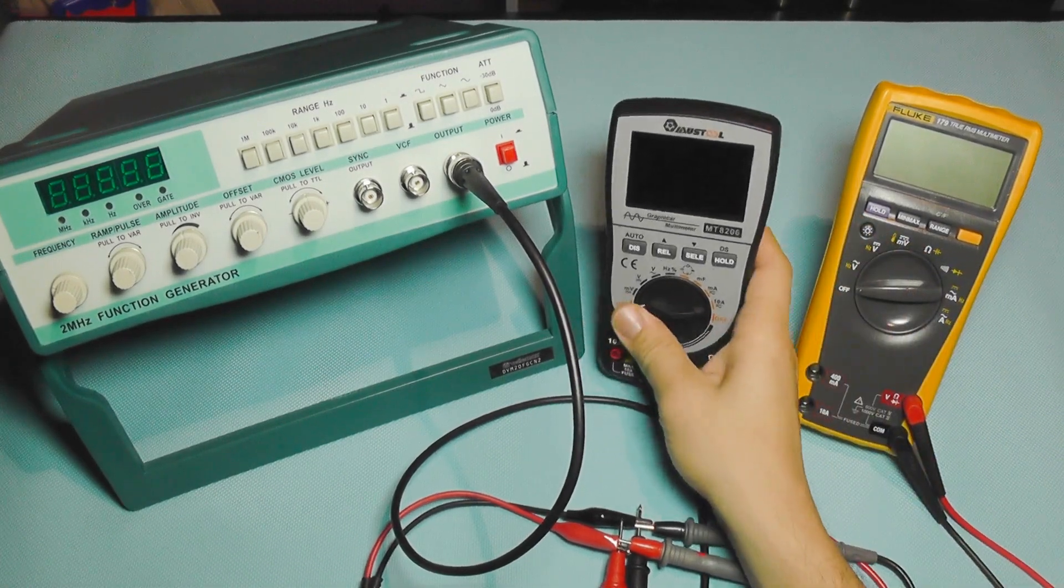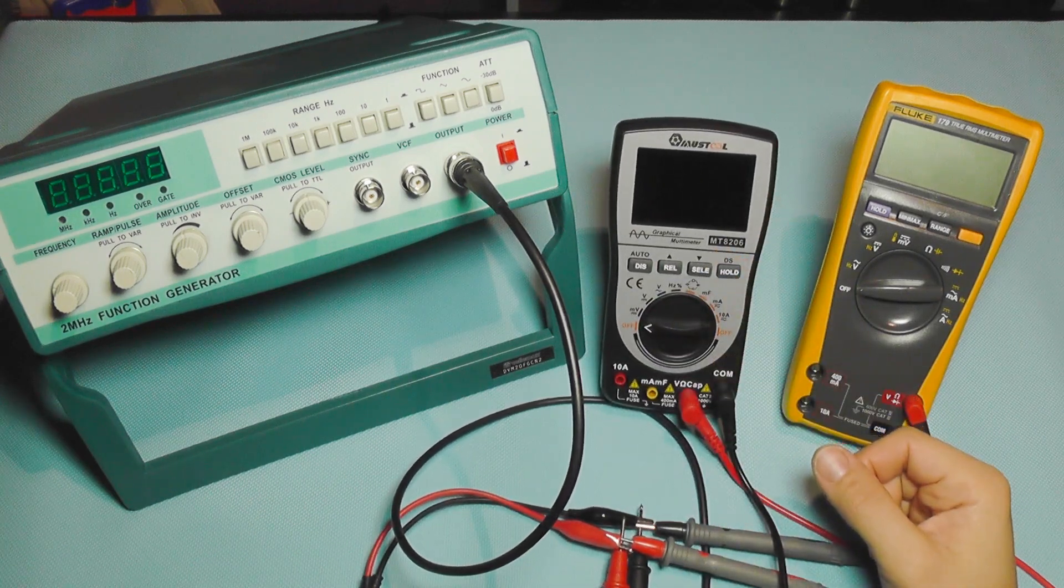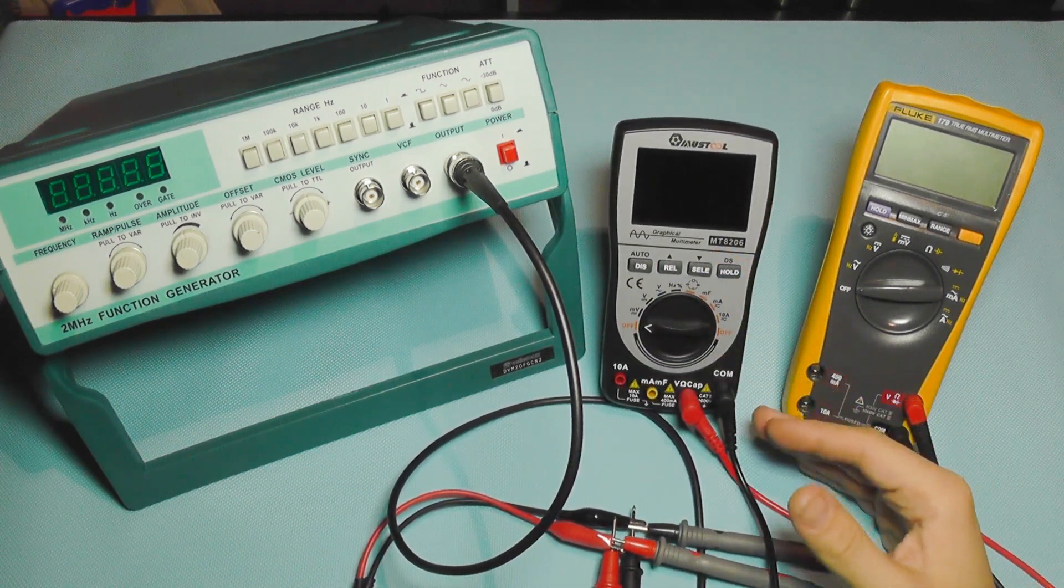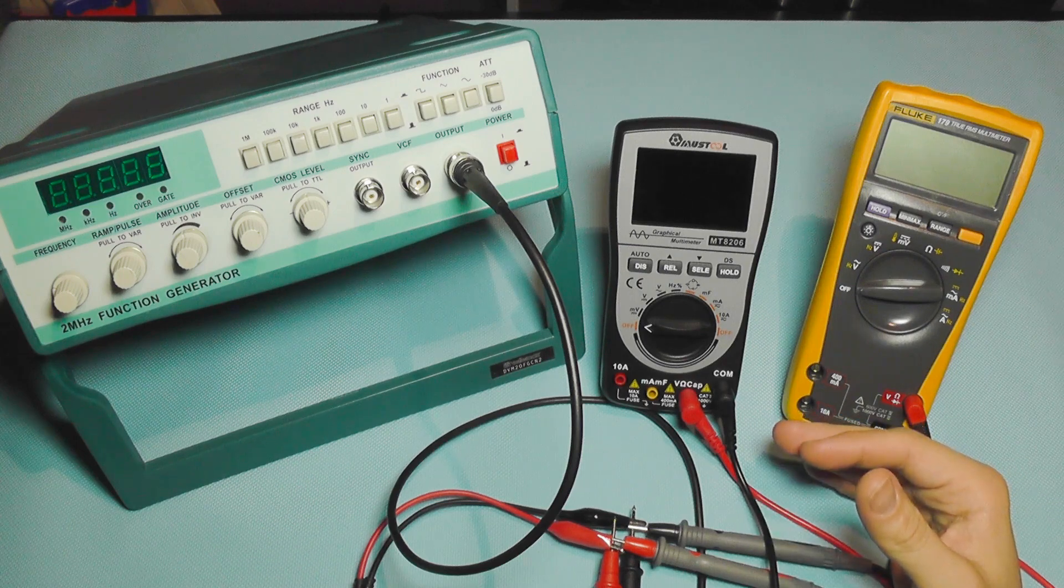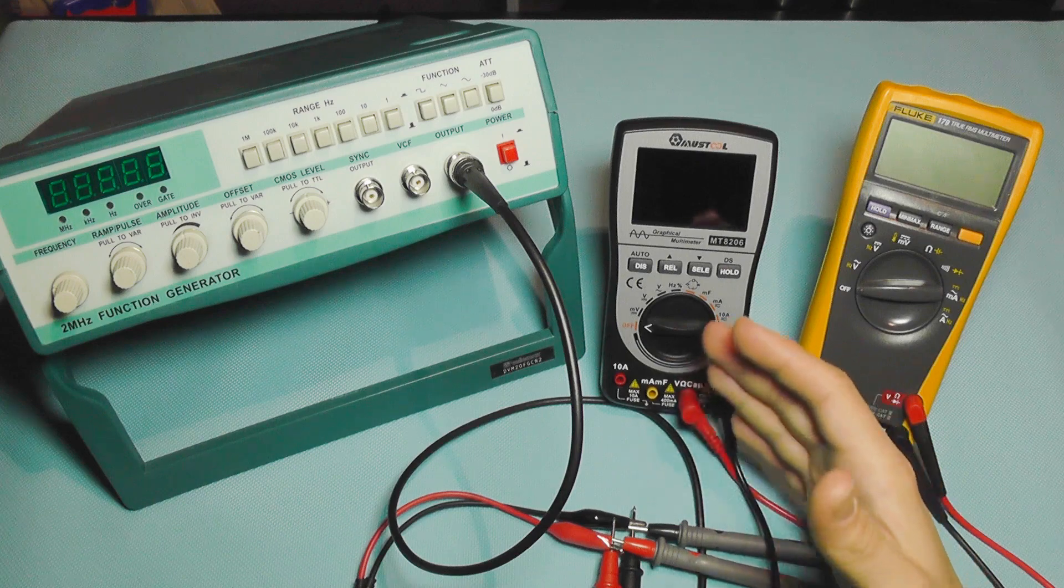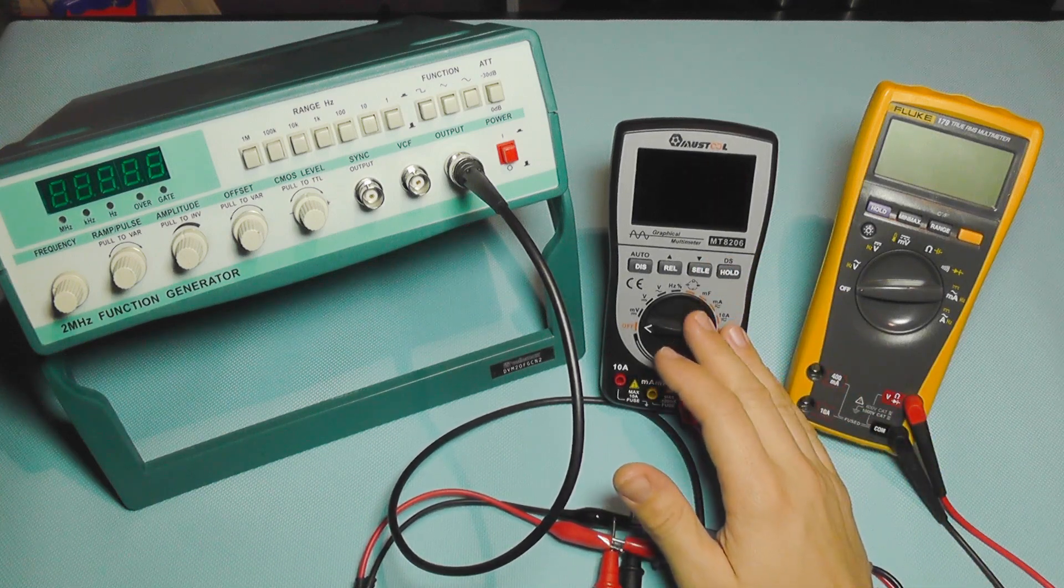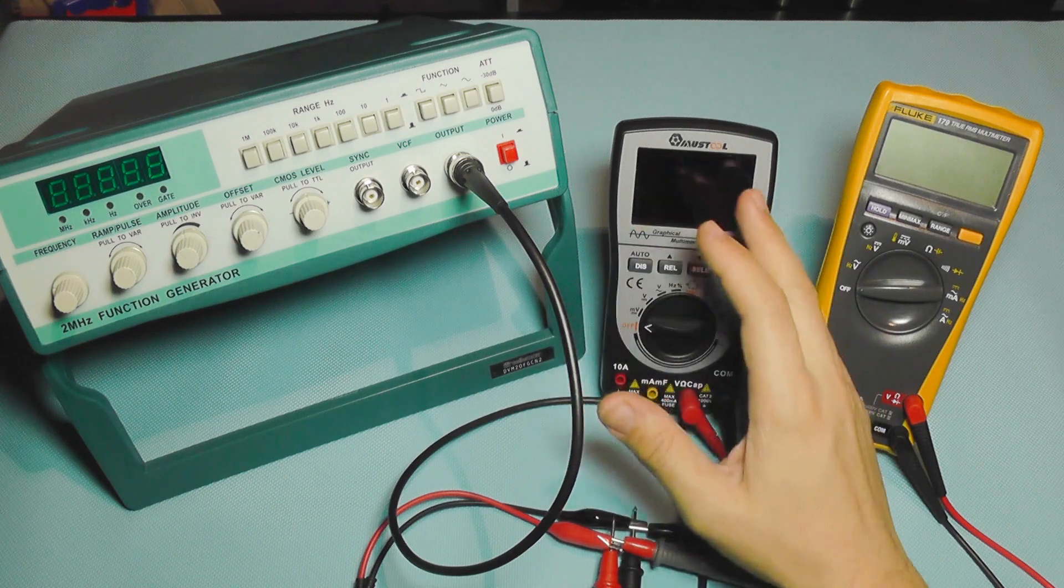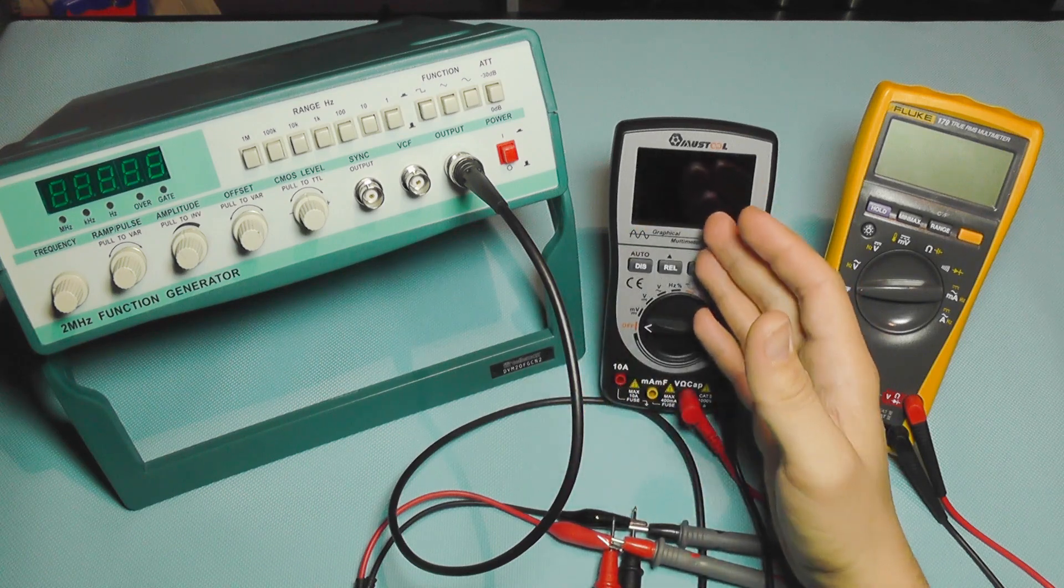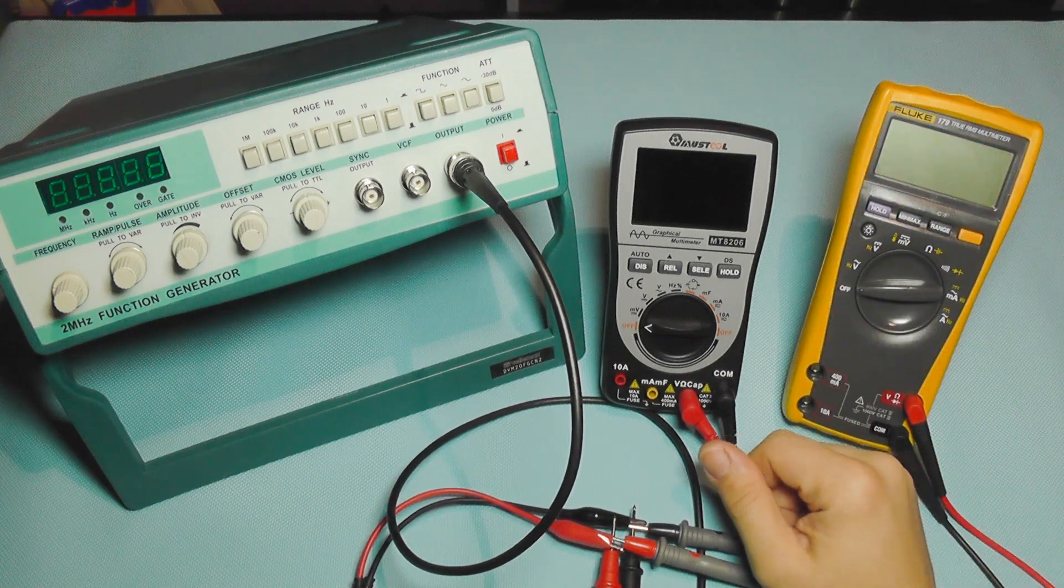Hello everyone. After my initial review of the Mass Tool multimeter with the so-called oscilloscope function, I received a very large number of questions. Many people asked if this is accurate, if the graph displays data correctly, and if it's in the range.